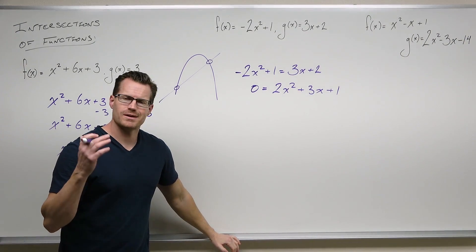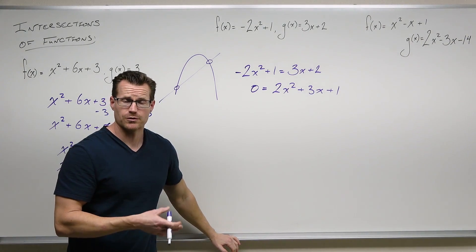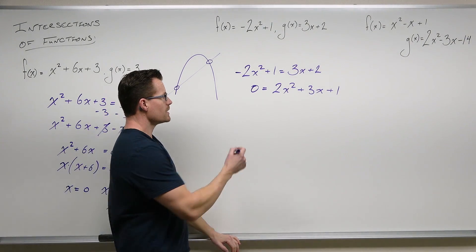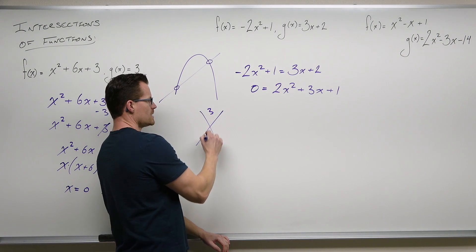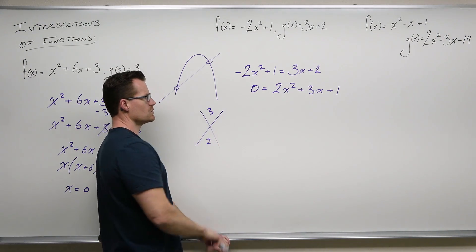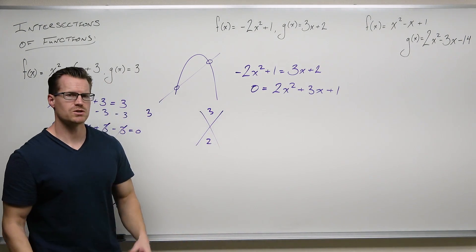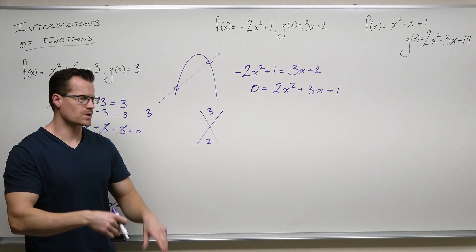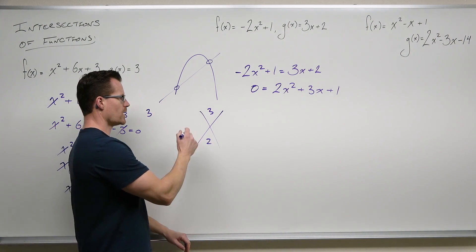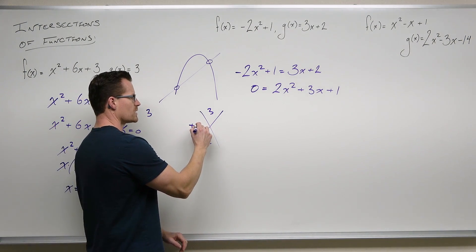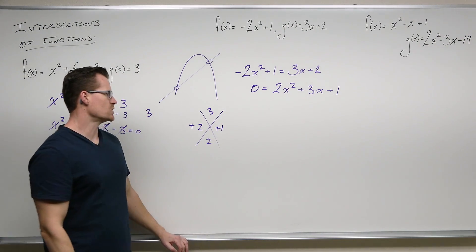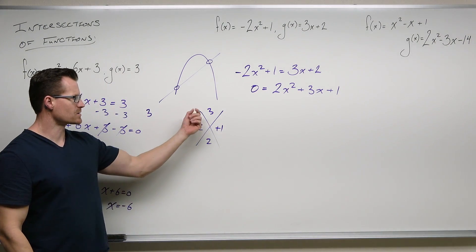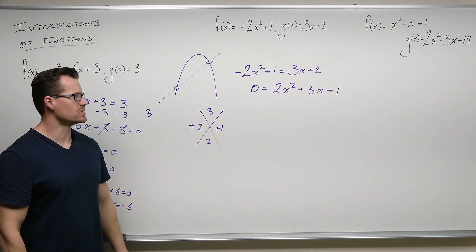Square root method is not going to work. Factoring — yeah, factoring is going to work. We know that we'd have 3 and 2 times 1 gives us 2. We're adding to 3 and multiplying to 2. They both have to be positive — they have to be 2 and 1. That adds to 3 and multiplies to 2.